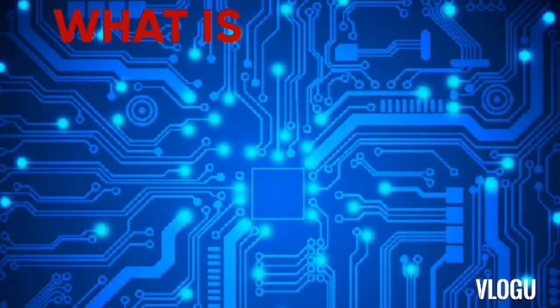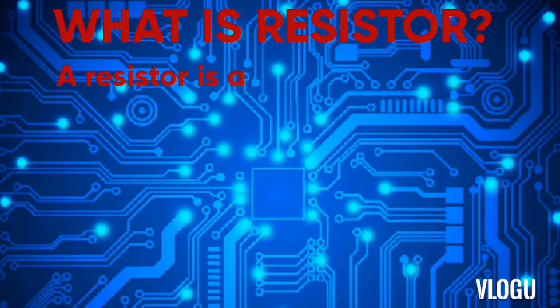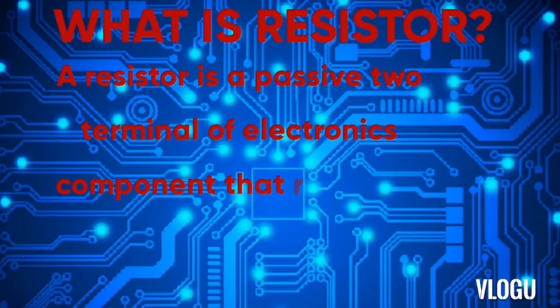What is a resistor? A resistor is a passive two-terminal electronics component that resists the flow of current and provides a voltage drop.